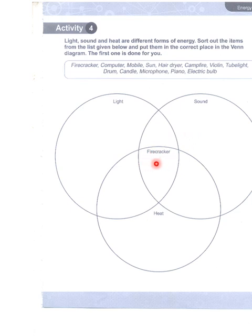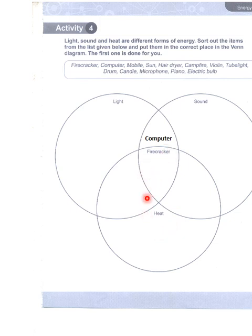تو یہ اس جگہ پر لکھتے ہیں۔ اب next is computer — computer سے کیا ہوتا ہے، I think کہ computer سے آپ کو light energy بھی ملتی ہے اس کی LED سے، اس میں sound بھی لے سکتے ہیں، اور heat بھی تھوڑی سی ہوتی ہے۔ You can have a different opinion, I don't have a problem with that. I think computer can do all these three things.